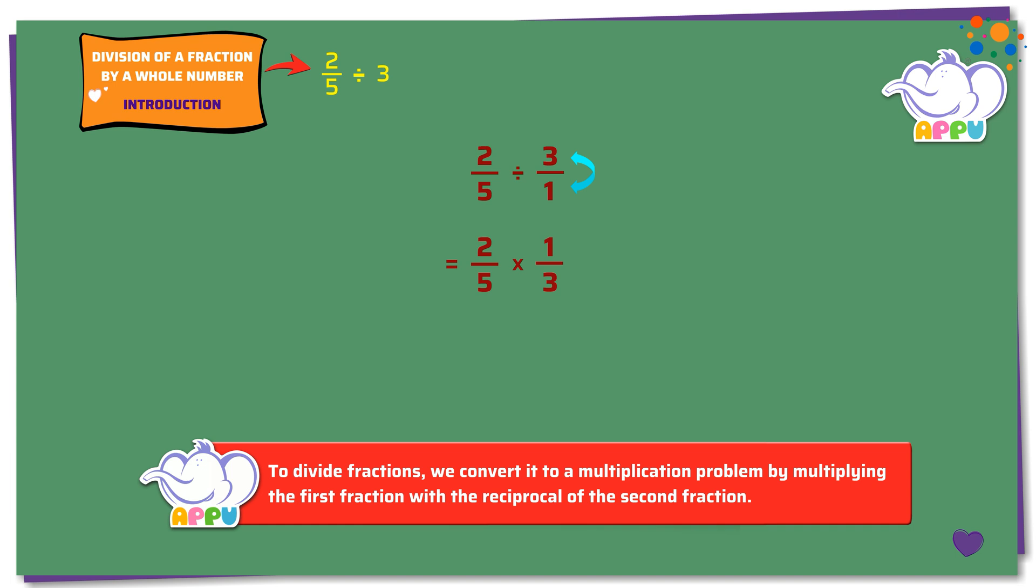We multiply the numerators to get 2 times 1 equals 2. We multiply the denominators to get 5 times 3 equals 15. This is equal to 2 by 15. The answer is 2 by 15.